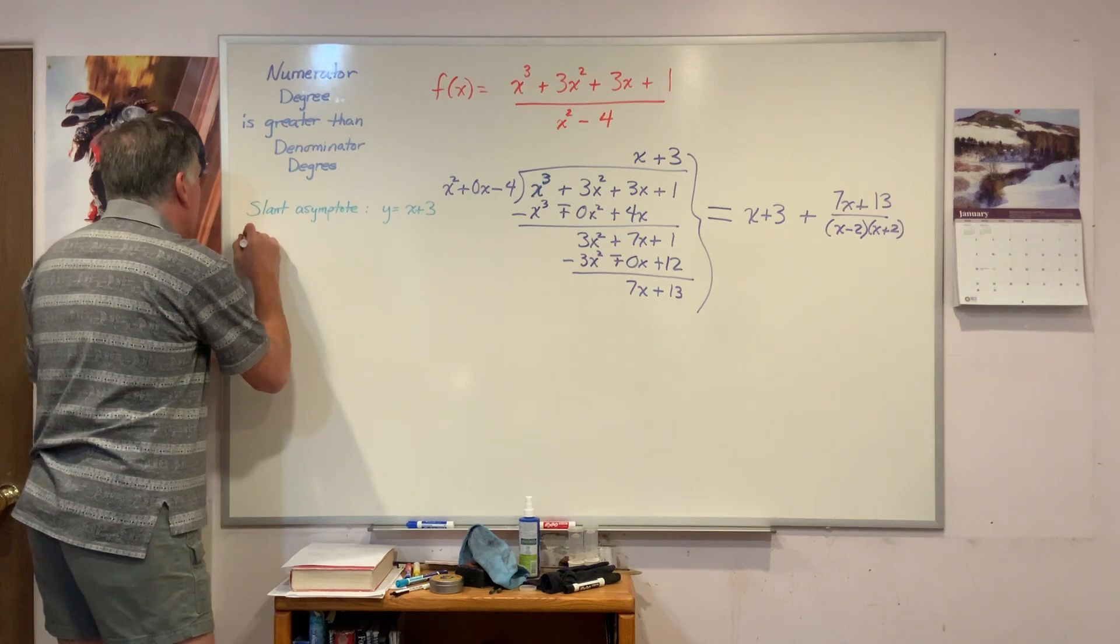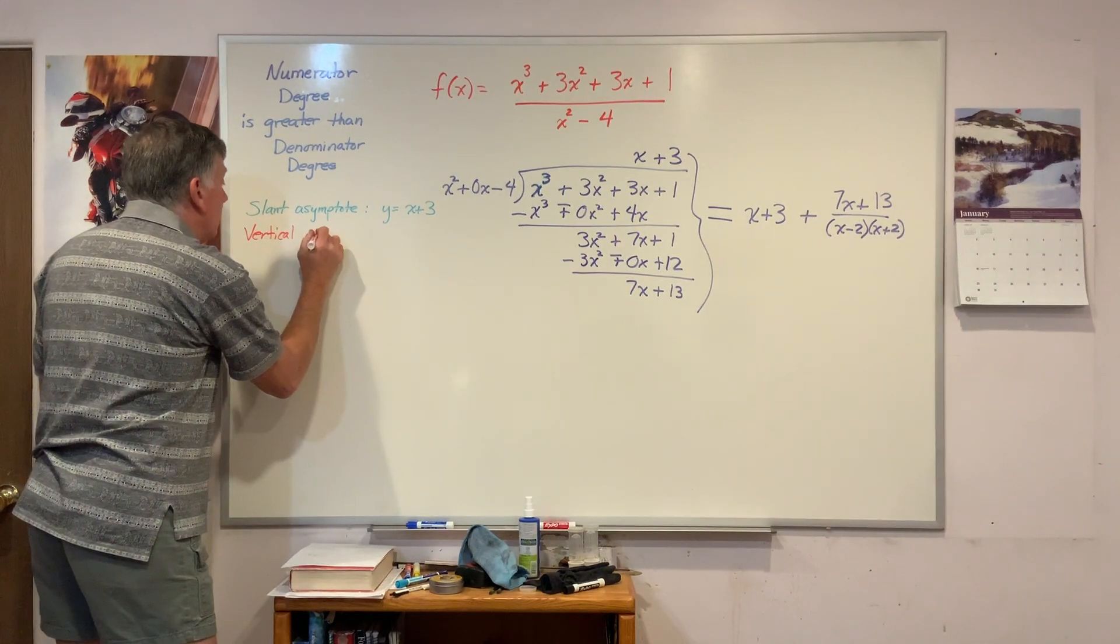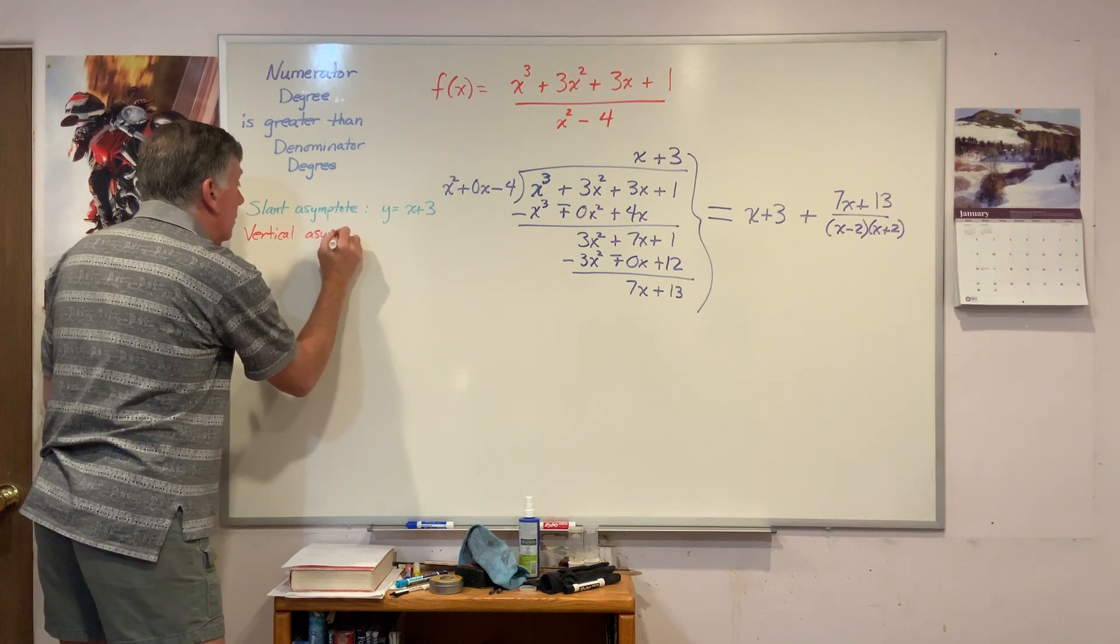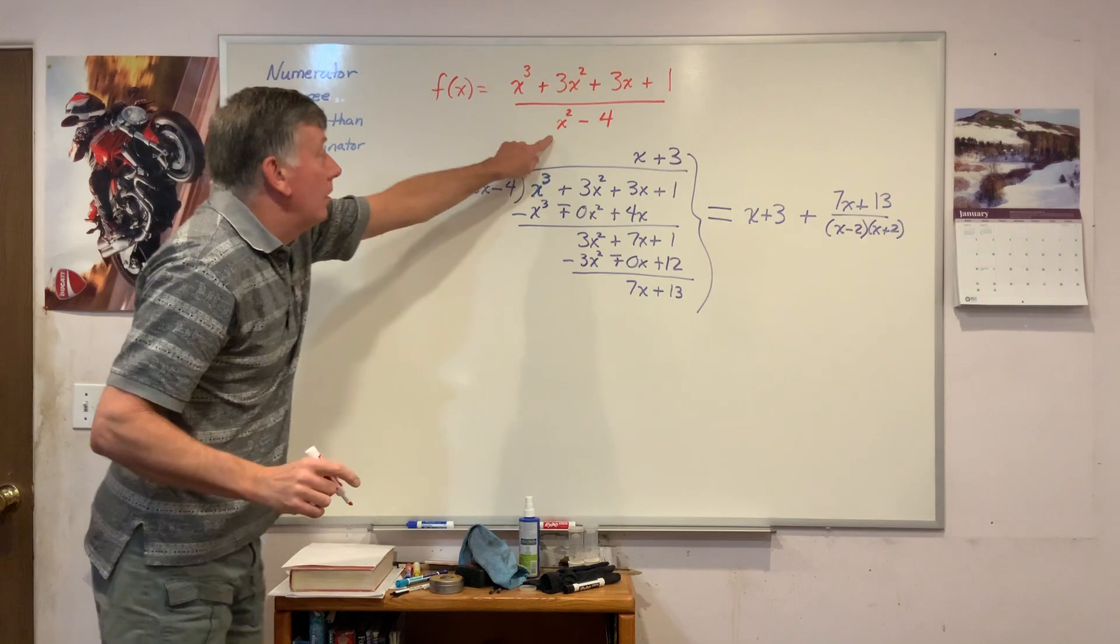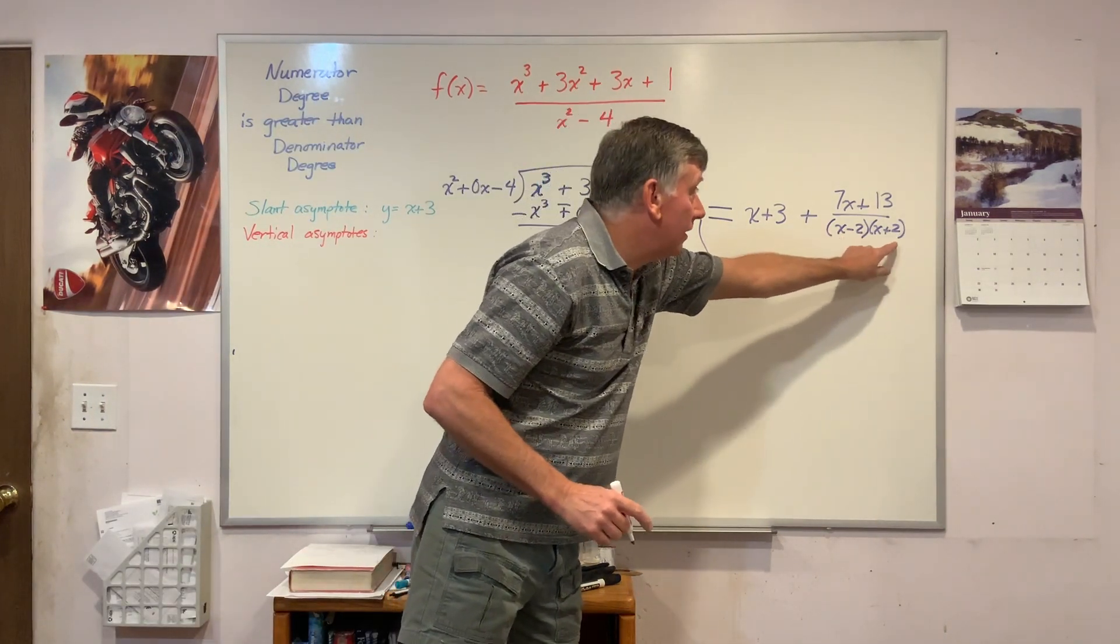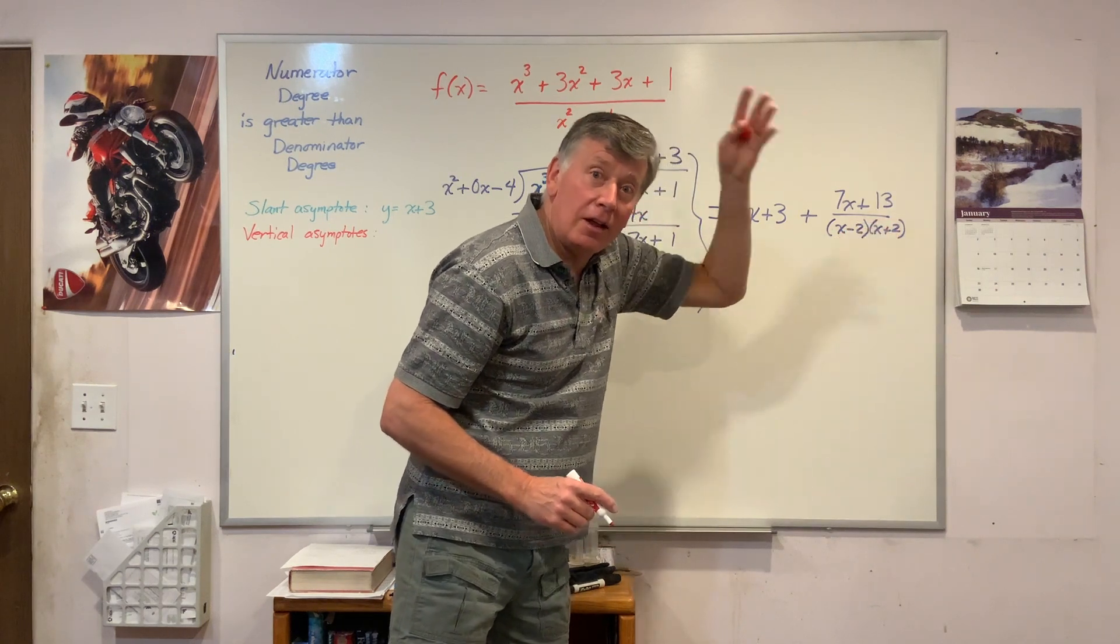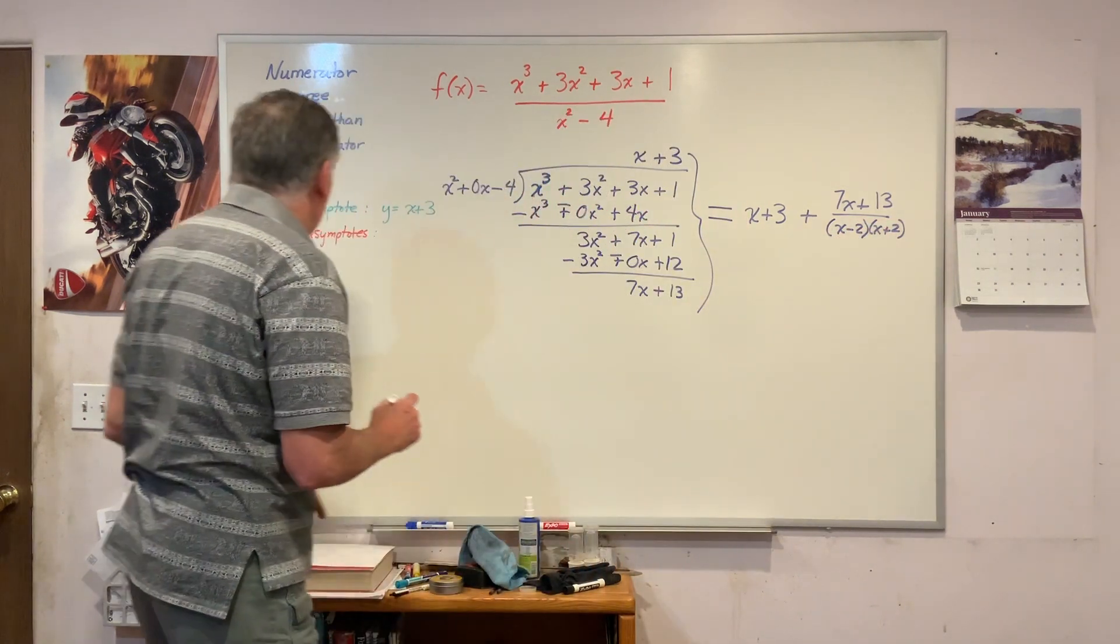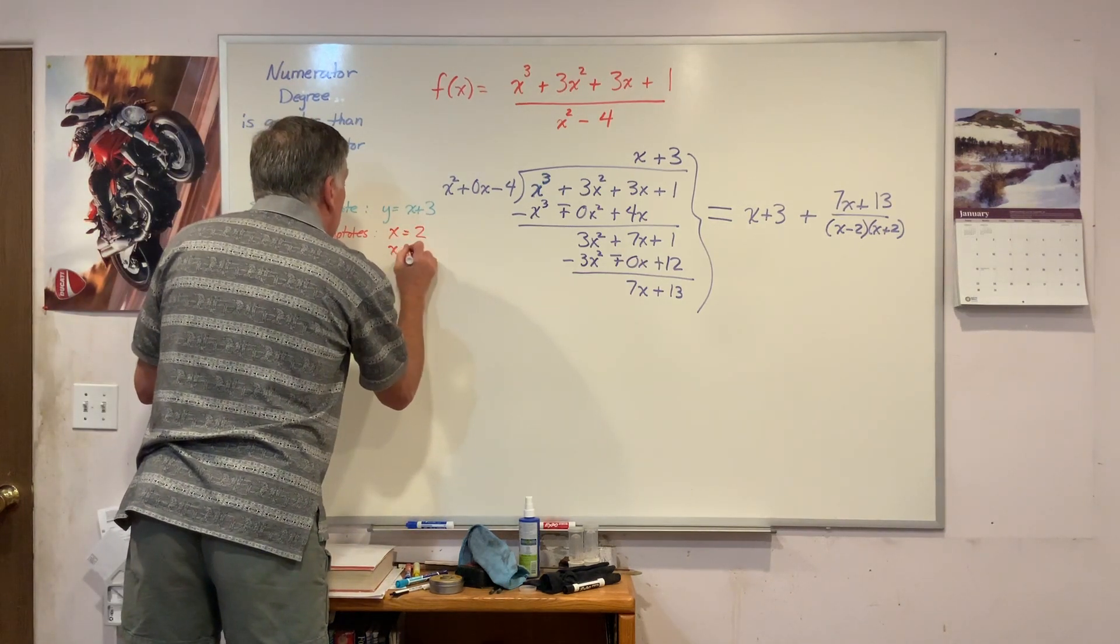My vertical asymptotes are at x equal to 2 and x equal to minus 2. Wherever I get a 0 in the denominator, that's where I'm going to have a vertical asymptote.